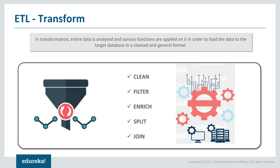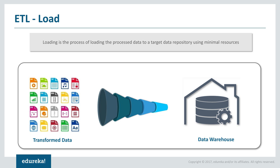The second step is transformation. The entire data is analyzed and various functions are applied on it in order to load the data into the target database in a clean and general format. We have rules: some columns are mandatory, some should have specific values, and we perform lookups to get other values. Transformation solutions include cleaning, filtering, deriving, enriching, splitting, and joining data — all based on business rules — ultimately producing clean, formatted data for further processing.